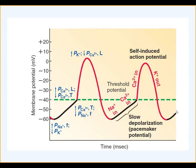The voltage-gated sodium channels opened, causing depolarization — the polarity flipped to positive due to rapid sodium influx. Then at the peak, we closed sodium channels and opened potassium channels, allowing potassium to exit — that was the repolarization event. But remember, we had to initiate it. Here in pacemaker cells, we have an algorithm — it initiates itself. These cells are never at rest, so we don't call it the resting membrane potential; it's simply the beginning point of the membrane potential.